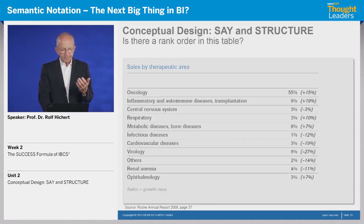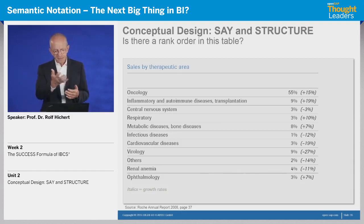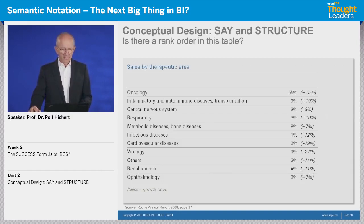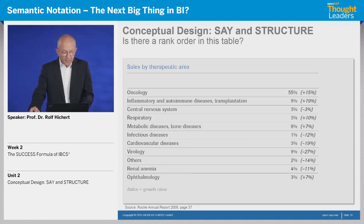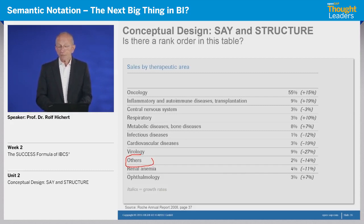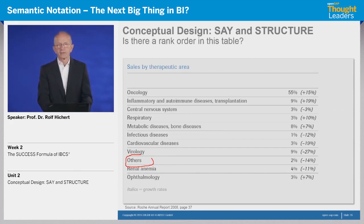When you look at this table, the first question is: what is the rank order? You might think it's sorted by share of sales — no, it is not. Then by variance compared to last year — no. Alphabetic order — no. Historic order — no, because 'others' appears in between. So what is the reason for this ranking? It's difficult to understand. This is not a perfect example of structuring a table.